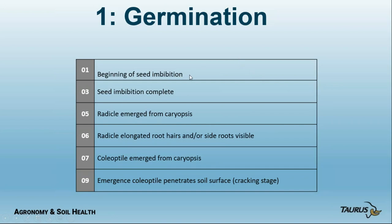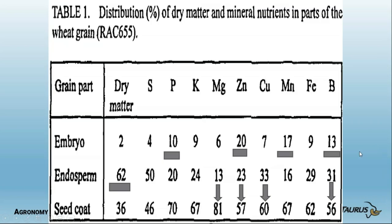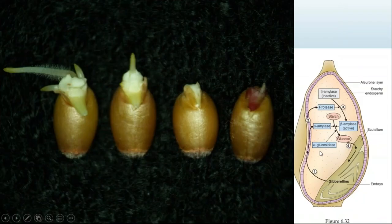Germination runs from the beginning of seed imbibition until the coleoptile penetrates the soil surface. Looking at nutrient levels in different parts of the seed: the embryo is high in P, high in zinc, has a fair amount of K, a lot of manganese, and a lot of boron. This tells us what is important to the plant. It needs manganese for photosynthesis right away, zinc for all enzyme groups, phosphorus for energy and cell building, and boron for cell wall structure.